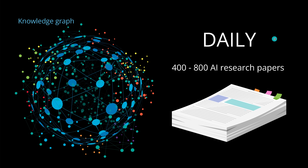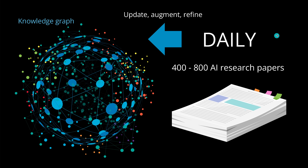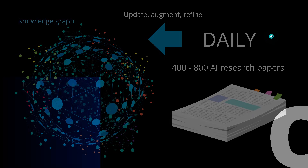This is now a problem, because what I want to do is not build a daily new knowledge graph, but simply update, augment, and refine the knowledge — bring new knowledge over into my existing knowledge graph. I'm not working with 800, but this is the main problem I encounter, and I would like to show you the latest solution, the latest AI research for this.